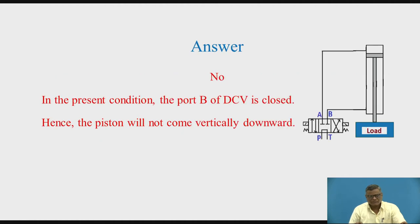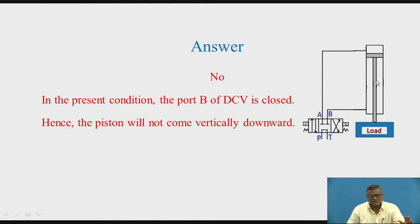In the present condition, you have to check the spool position — it is in the middle. If the piston has to come vertically downward, the oil from the rod end side should be going to the tank. But port B is closed. So the load is not going to come vertically downward, and the piston is not going to come vertically downward, but it is exerting pressure to some extent presently. That is the answer.